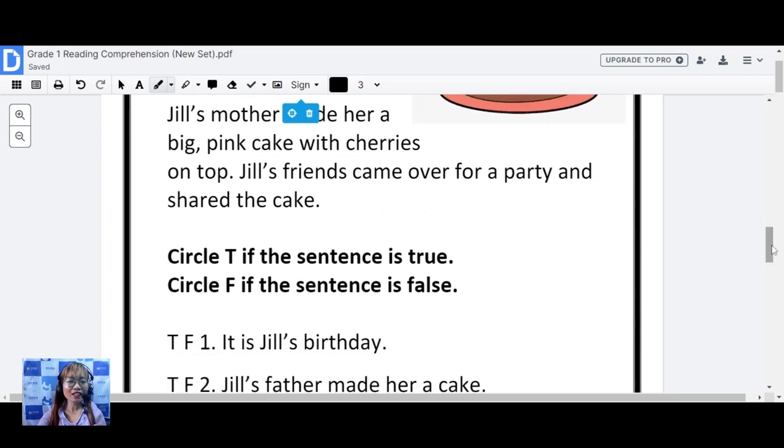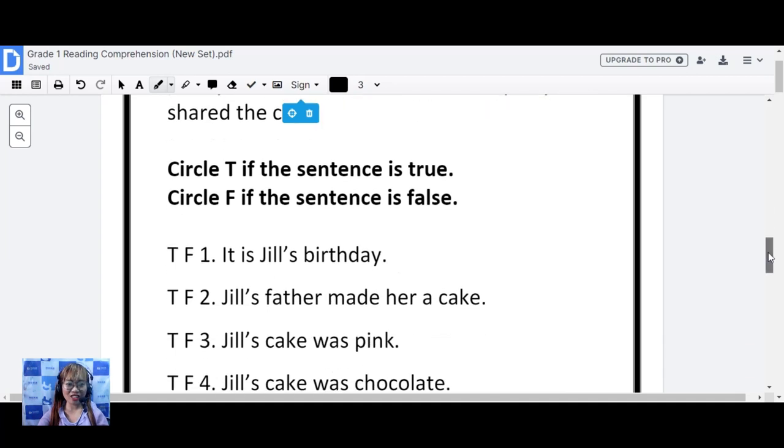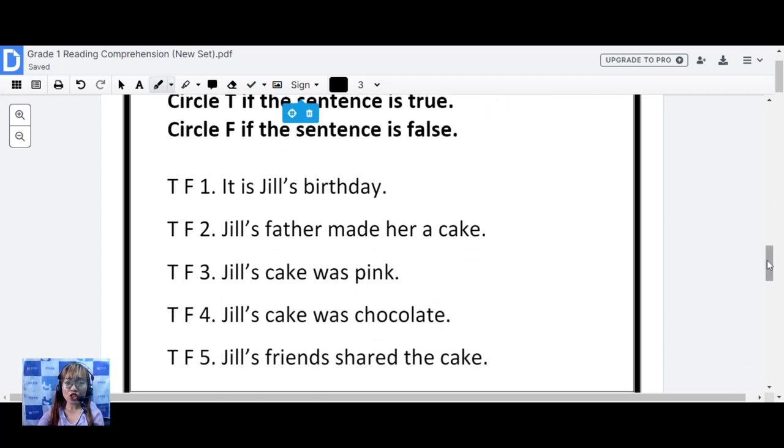Okay, this one, let's read the instructions. Circle T, big T, if the sentence is true. And circle F, if the sentence is false. Okay, let's try this one. It is Jill's birthday. True or false?